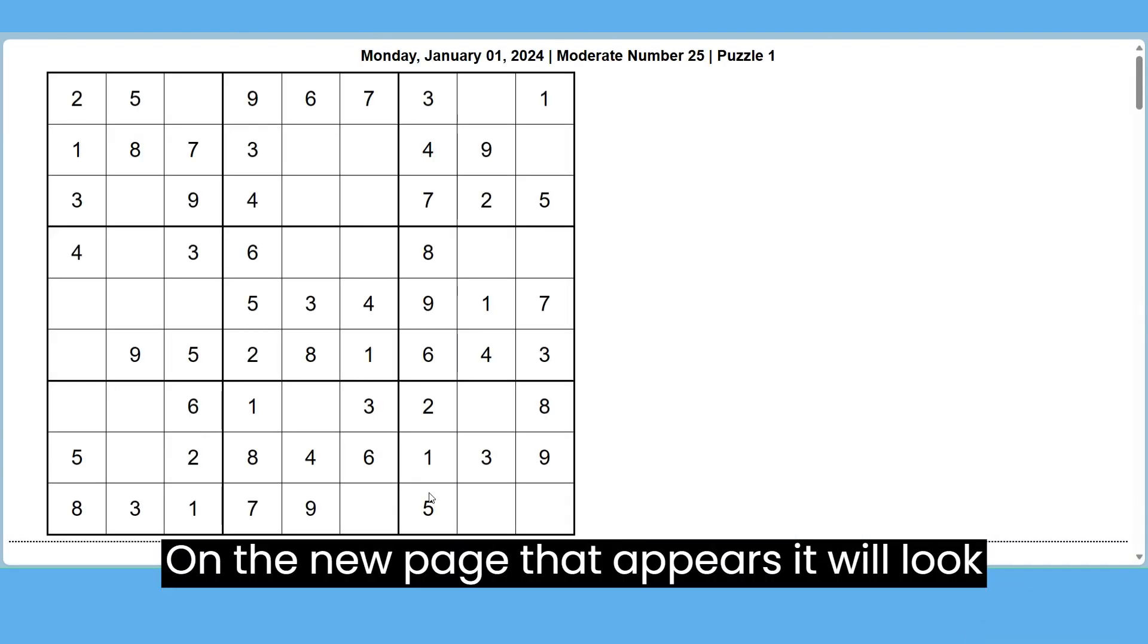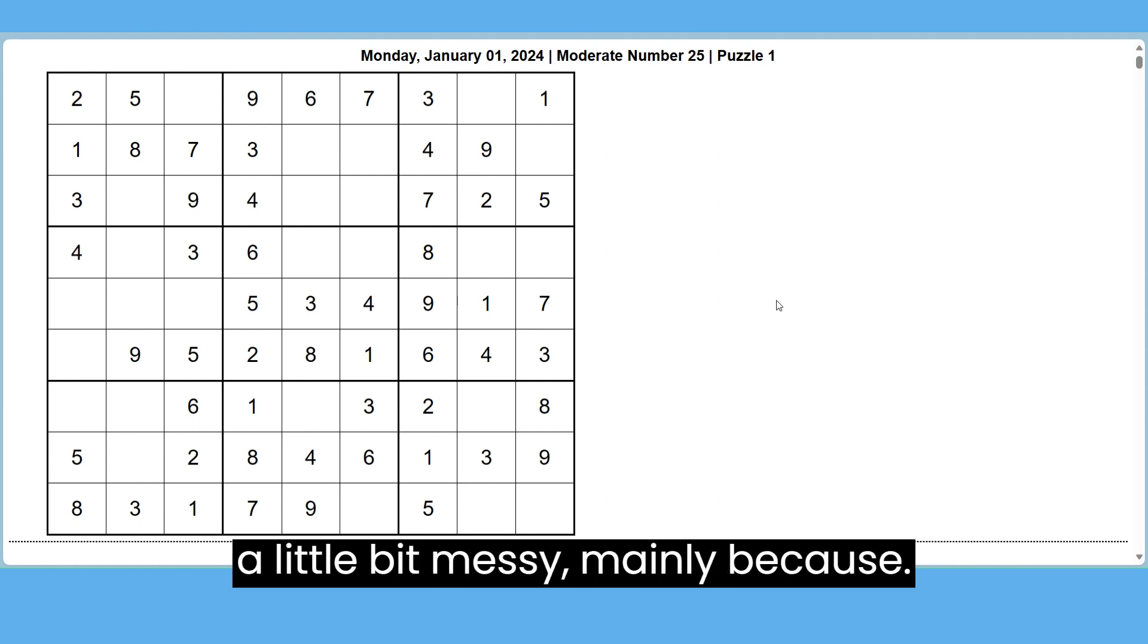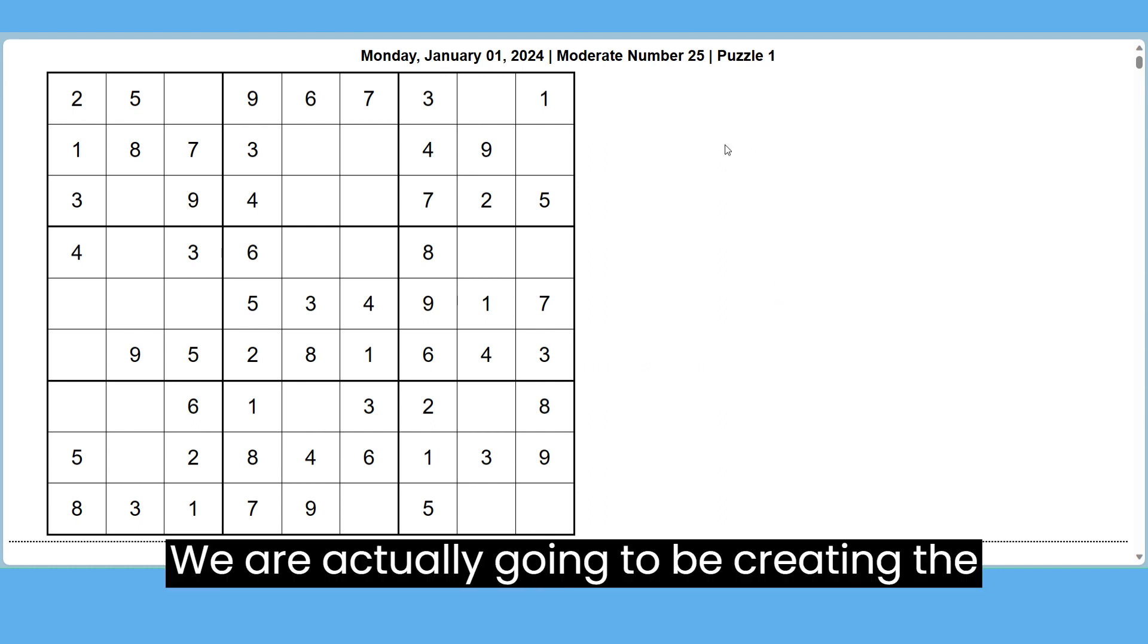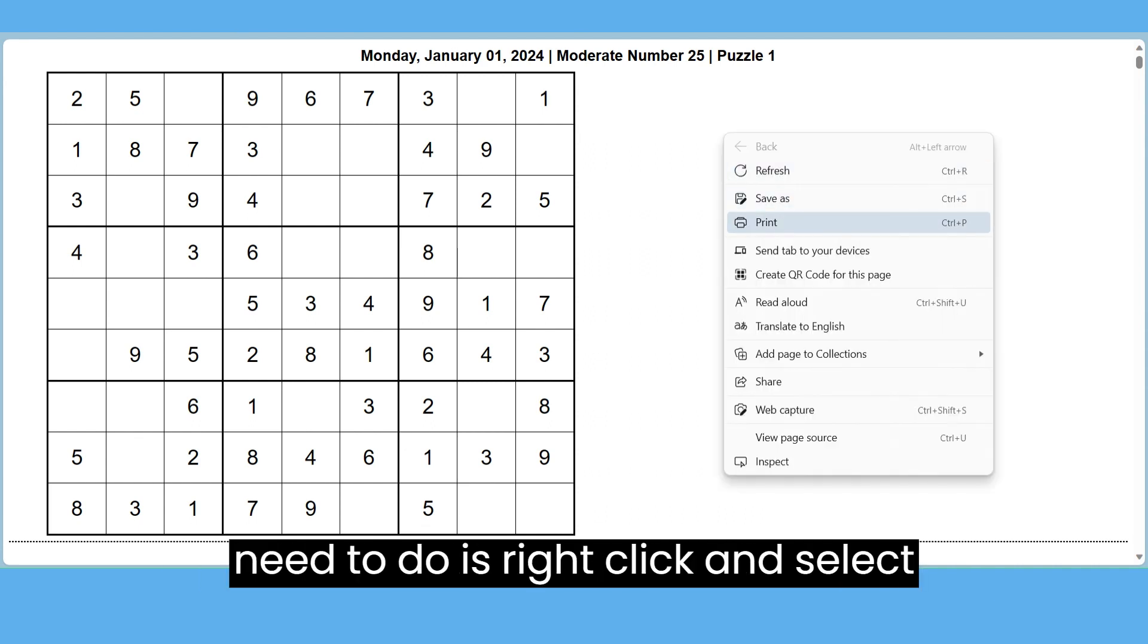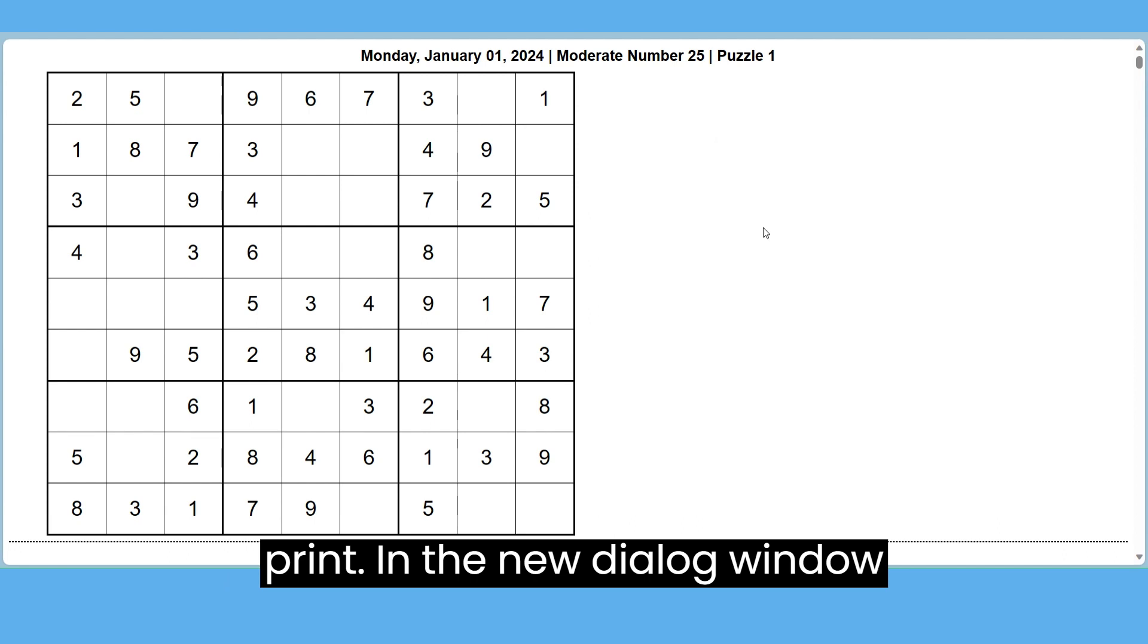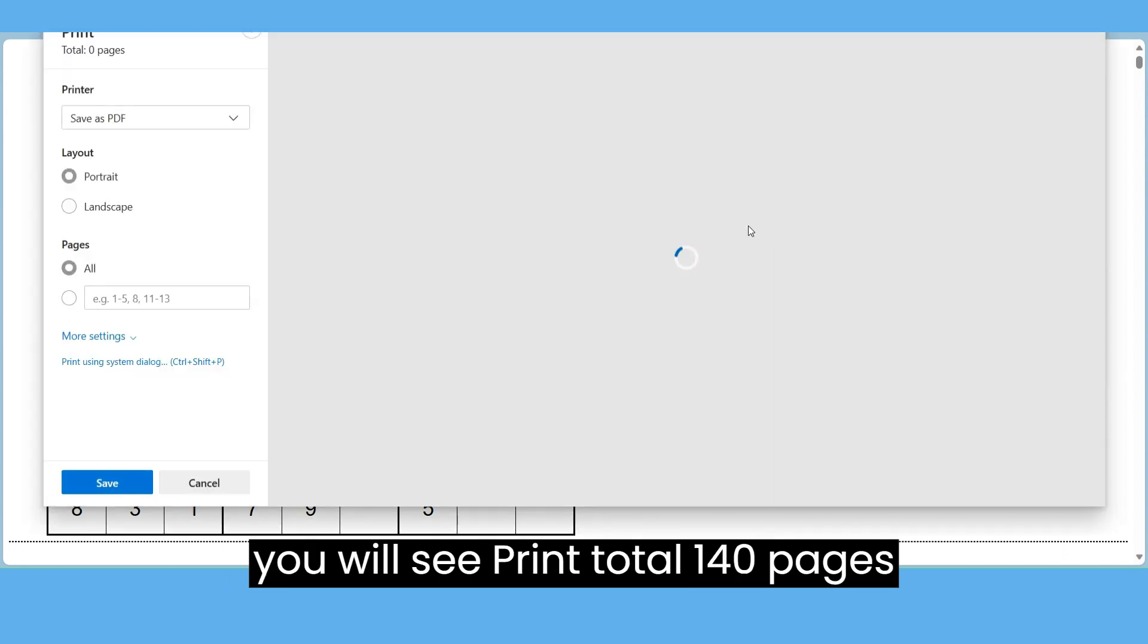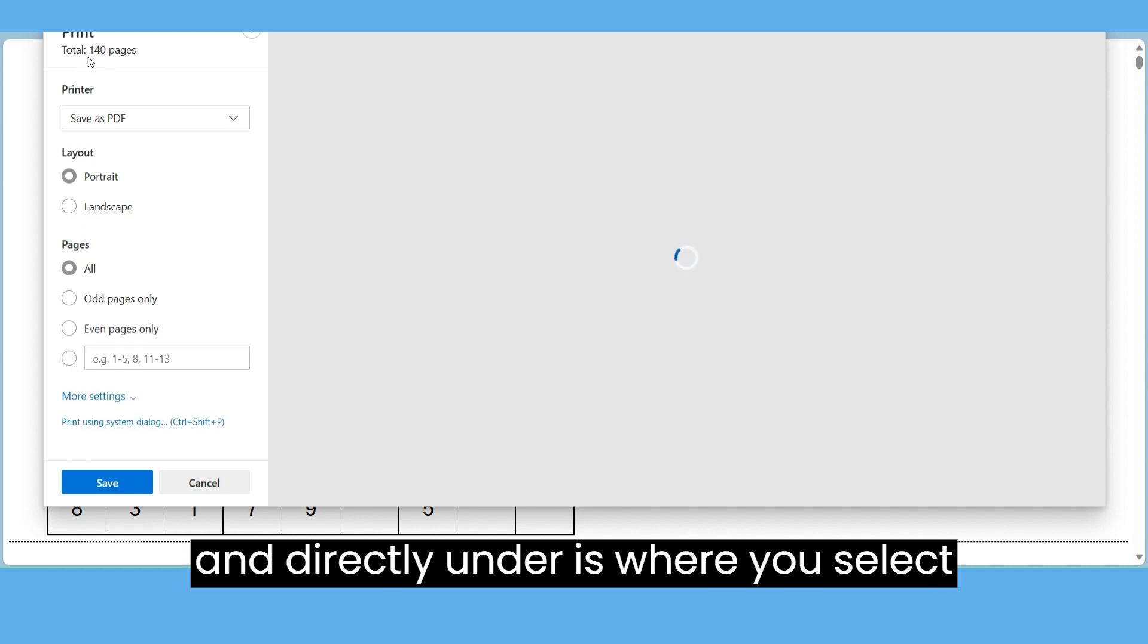On the new page that appears, it will look a little bit messy, mainly because we are actually going to be creating the PDF from the website. What we need to do is right-click and select Print. In the new dialog window you will see Print Total 140 Pages, and directly under is where you select the printer to use. Set Save as PDF or Microsoft Print to PDF.